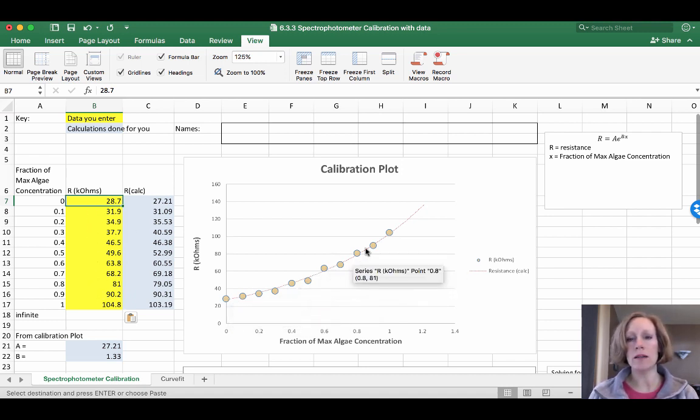So let's take a look at what we've done. I've entered in the data and the plot right here is a fraction of the maximum algae concentration against the resistance. And so this is the curve that we get. The dots are the data and the dotted line is the curve fit. So what is the equation that we're fitting? We're using this equation here and it's an exponential equation where resistance is equal to some constant A times the exponential of another constant B times the fraction algae concentration. So we're using a least squares fit to fit this equation to the curve and it basically is optimizing this A and B to get a minimum square difference between the data point and the line.